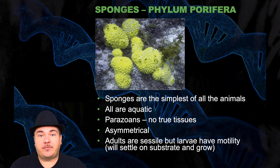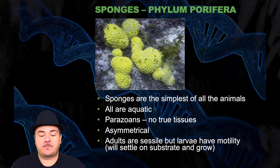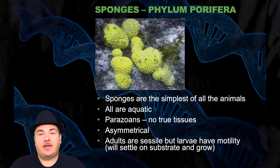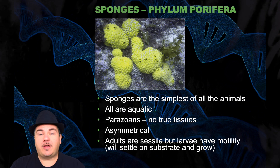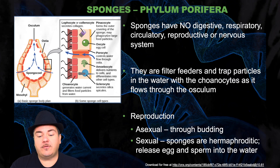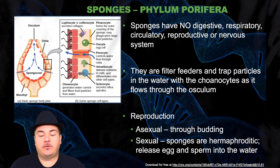Now we're going to start going through the different types of animals, starting with the sponges, which are in the phylum Porifera. Sponges are the simplest of all animals. They're aquatic, they're parazoans meaning they have no true tissues, they're asymmetrical, and the adults are sessile — not moving — though the larvae have motility. Sponges have no digestive, respiratory, circulatory, reproductive, or nervous systems. They're filter feeders and trap particles in the water with the choanocytes as water flows through the osculum.